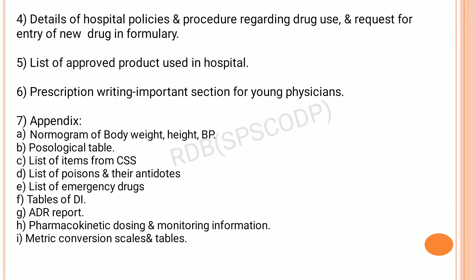Lastly, the formulary contains an appendix providing various information like a nomogram of body weight, height, and BP; a posological table important for calculating doses; list of items from CSS; list of poisons and their antidotes; list of emergency drugs; table of drug interactions; adverse drug reaction reports; pharmacokinetic dosing and monitoring information; and metric conversion scales and tables.